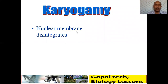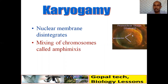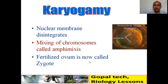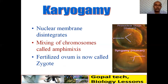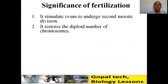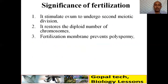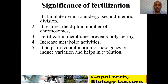Karyogamy: the nuclear membranes of both nuclei disintegrate, mixing chromosomes — a process called amphimixis. The fertilized ovum is now called the zygote. One pronucleus comes from the mother and one from the father, each carrying half the chromosomes. The importance of fertilization: it stimulates the ovum to undergo the second meiotic division; it restores the diploid number of chromosomes; the fertilization membrane prevents polyspermy (monospermy); it increases metabolic activity of the zygote; and it induces variation, helping in evolution.